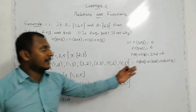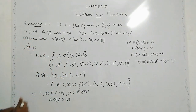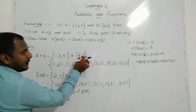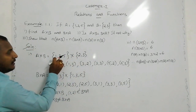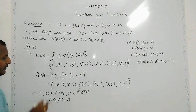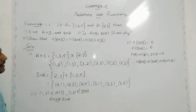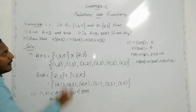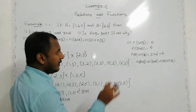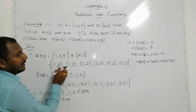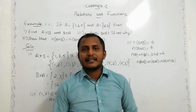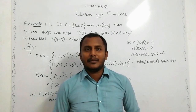So that's how we can prove that n of A cross B equals n of B cross A equals n of A into n of B. So the cross product: first A cross B, second B cross A — these are not equal. But the number of elements are equal. Ok students, this video is done. Next video will be Example 1.2 and the next question. Thank you.